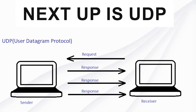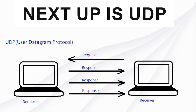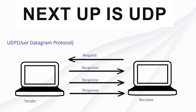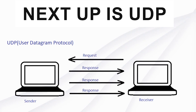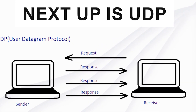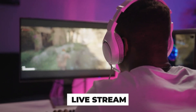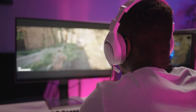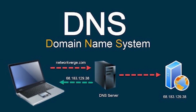Next up is UDP. If TCP is a careful delivery truck, UDP is like a bicycle messenger zooming through traffic. It's faster because it doesn't wait around to check if every packet made it. That's why it's used for live streams and online gaming, where speed is more important than perfection.